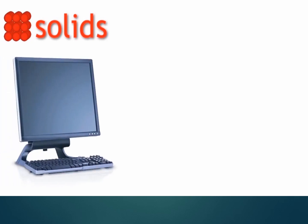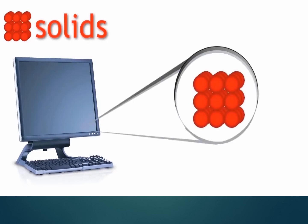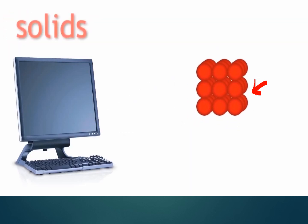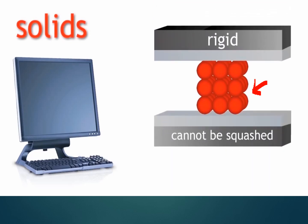Solids, for example, your computer or screen — they are solids. Here, you can see the particles of matter. These particles are closely together. That means there is no intermolecular space between them, or the intermolecular spaces are very, very small. Also, they have fixed positions. Solids are rigid and cannot be squashed, have a fixed shape, and fixed volume.